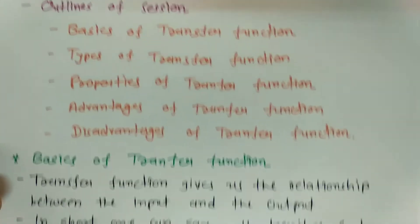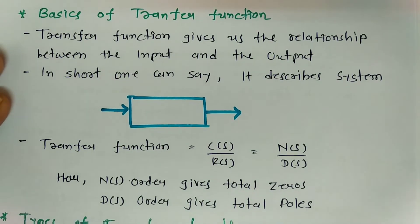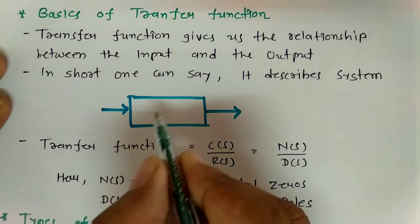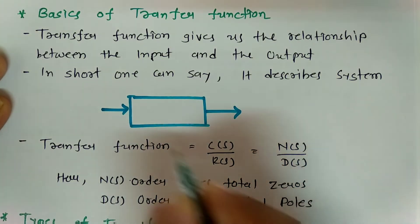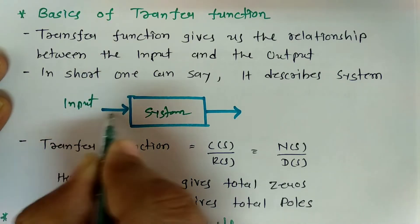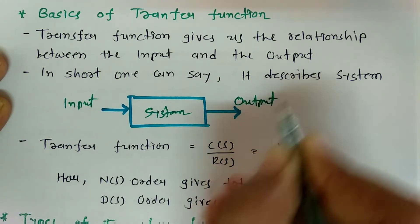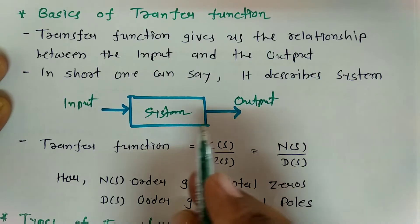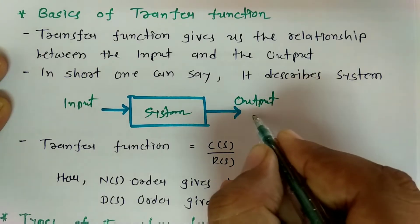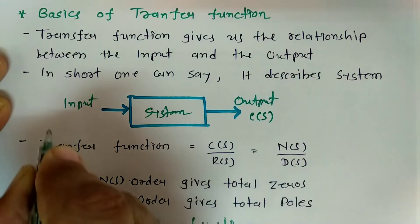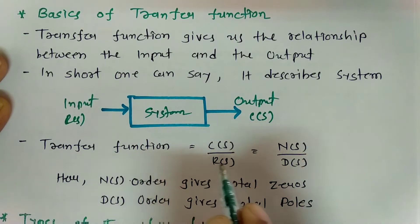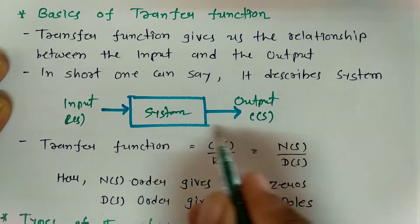Let us begin with the basics of transfer function. Transfer function gives the relationship between input and output. For example, if this is a system provided with an input and having an output, then transfer function is the ratio of output to input — that is, if my output is C(s) and my input is R(s), then transfer function is the ratio of output to input.